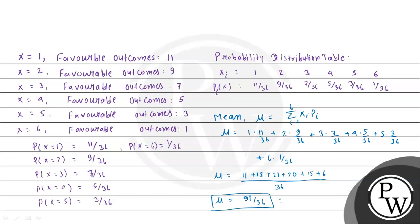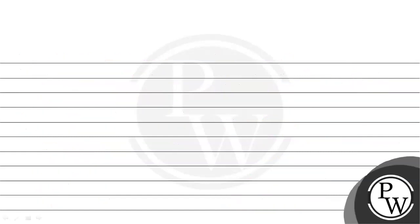In decimal form, mu is approximately 2.5. Now we can find the variance.